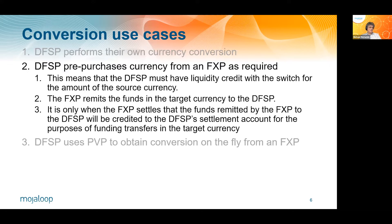In a case where a DFSP pre-purchases currency from a foreign exchange provider, it means that the DFSP must have liquidity credit with the switch for the amount of the source currency it's converting. The foreign exchange provider will remit the funds in the target currency to the DFSP, but they won't be available at that point for liquidity cover for transfers in that currency. It's only when the foreign exchange provider settles that amount that the funds remitted will be credited to the DFSP settlement account for the purposes of funding transfers. Again, that will not require a great deal of modification to the way in which things happen now.